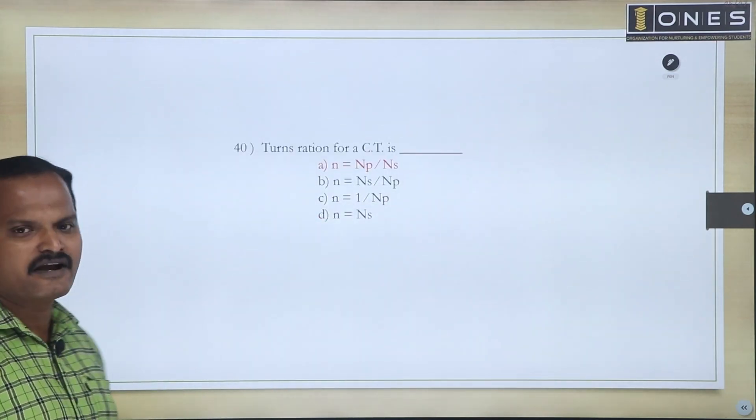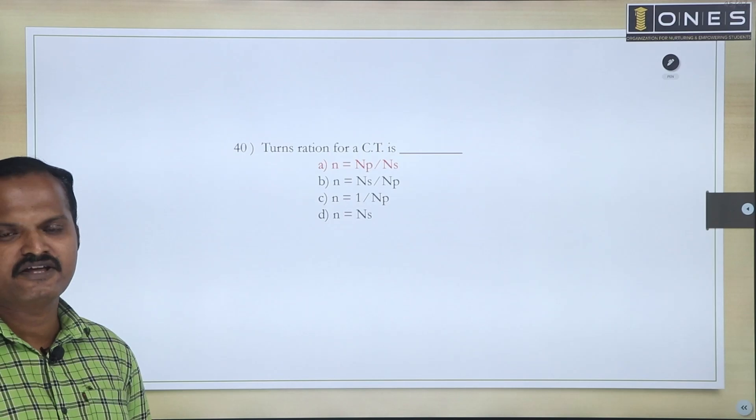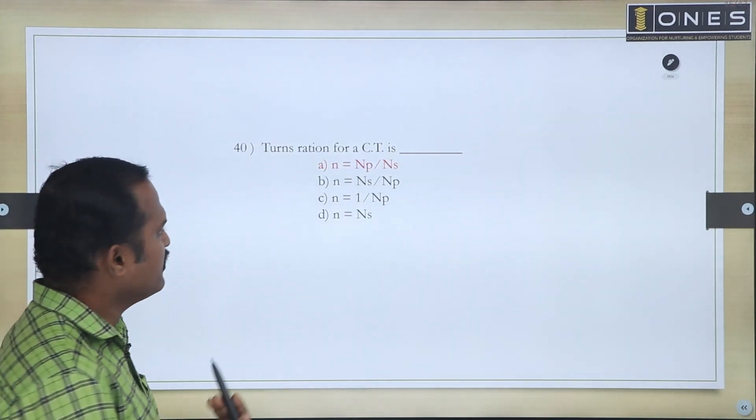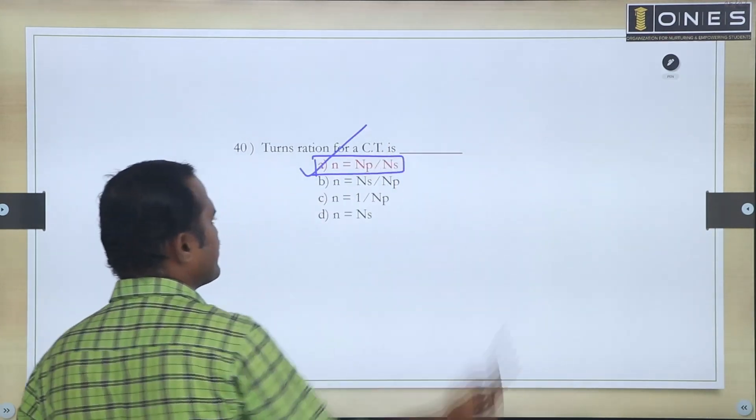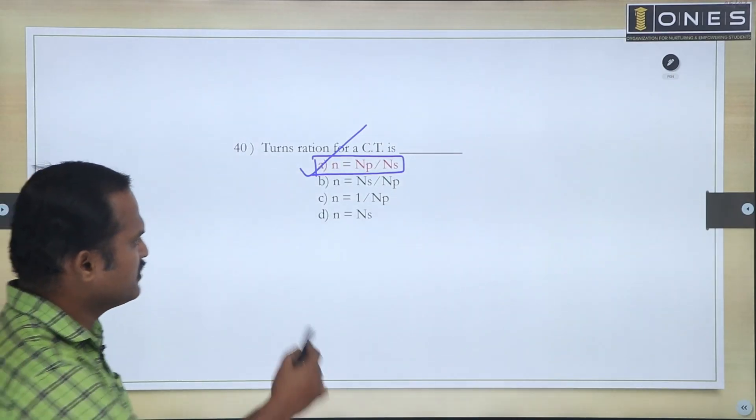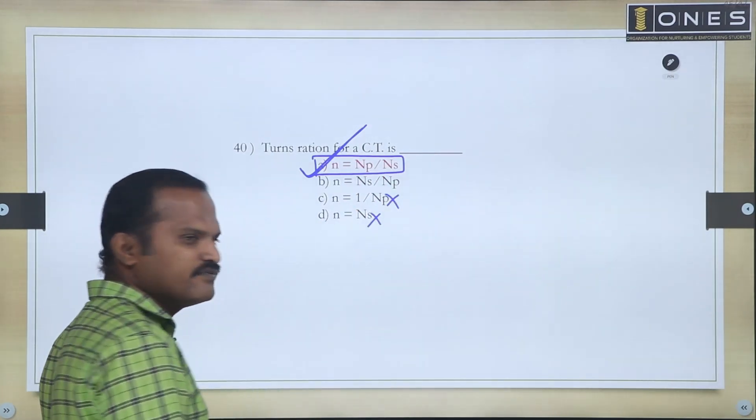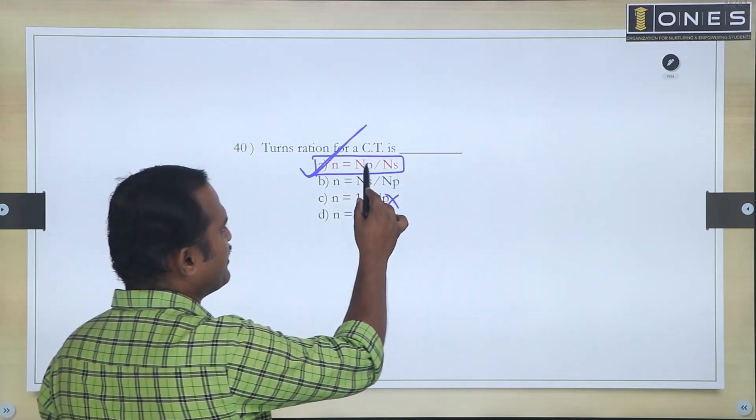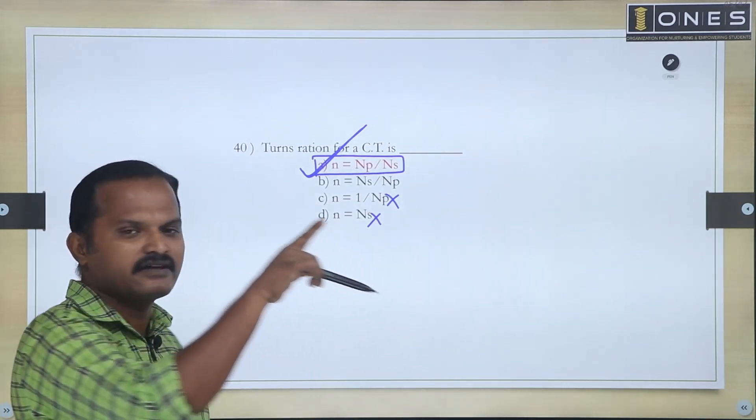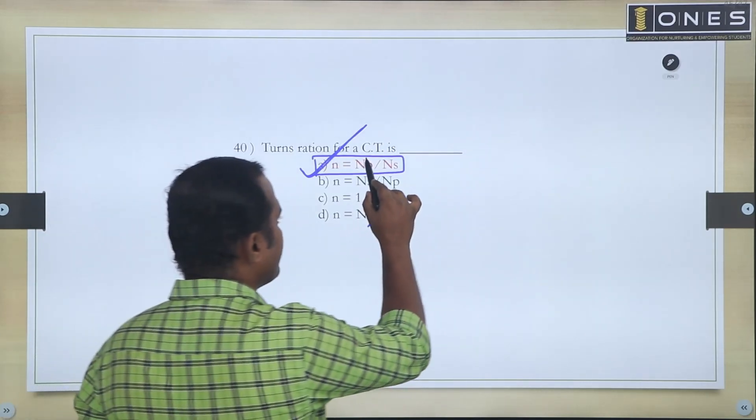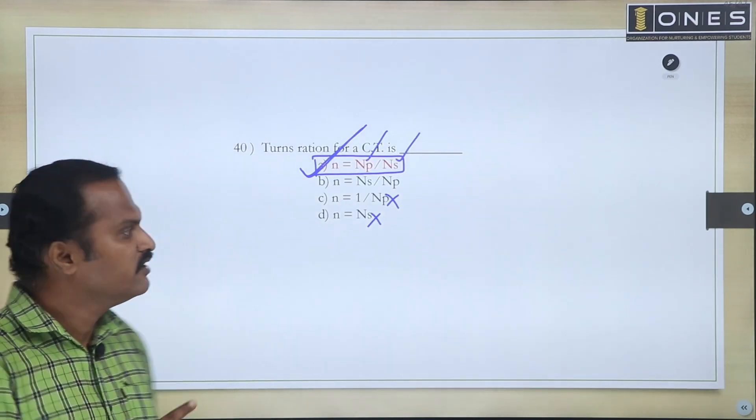Last question: It is about turns ratio. The turns ratio we denote as k or small n. So n is equal to Np by Ns. The turns ratio for a current transformer CT is equal to Np by Ns. There might be confusion between A choice and B choice. n equals Np by Ns, where n denotes the number of windings of the primary, and Ns is the number of turns in the secondary windings.